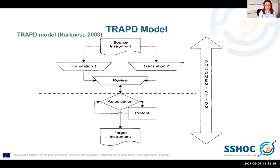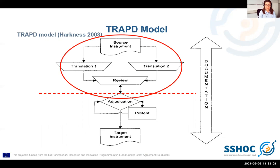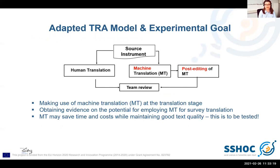Our machine translation study is based on the TRAPD model that many of you are familiar with. We are focusing on the first TRA steps where double translation is done independently by two human translators, and afterwards their versions are discussed in the review team. We have adapted this TRAPD model and introduced machine translation at the human translation step. We make use of machine translation and post-editing — that is, correction of machine translation — at the translation stage to obtain evidence on the potential for deploying machine translation for survey translations. We assume machine translation may save time and costs while maintaining good text quality, but this is to be tested.